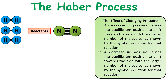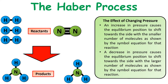Looking at the reactants, we've got four moles of molecules. Looking at the products, we've got two moles. So the reactants want to turn into products because that lowers the overall pressure in the system — we're going from four molecules to two. By artificially increasing the pressure, we shift the equilibrium so that more reactants are turning into products.